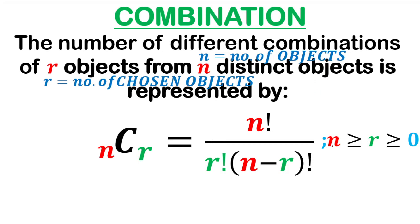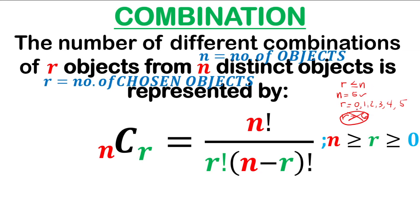This means that the value of r must be less than or equal to n. For instance, if n is equal to 5, then the values of r must be either 0, 1, 2, 3, 4, or equal to 5. If you finalize that your r is 6 when n is 5, this is wrong. r must be less than or equal to n but greater than or equal to 0.